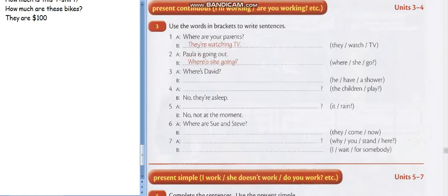Number 1. A: Where are your parents? B: They are watching TV. Good.